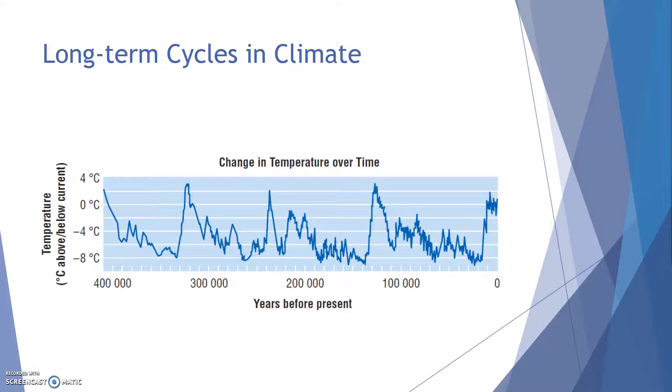If we look at the long term cycles and climate, it's believed that the climate here on Earth cycles between what we're going to call ice ages and interglacial periods. An ice age is a period of time when the Earth is colder and much of it is covered in ice. An interglacial period is any period of time between ice ages where the planet is warming up. So we are currently in an interglacial period.